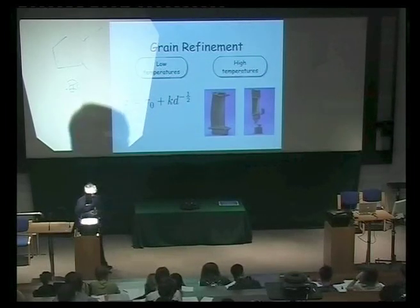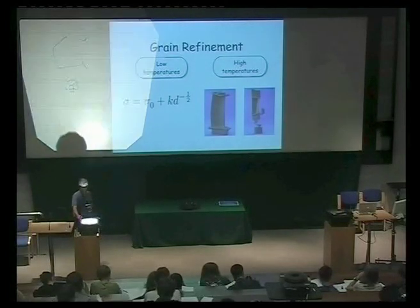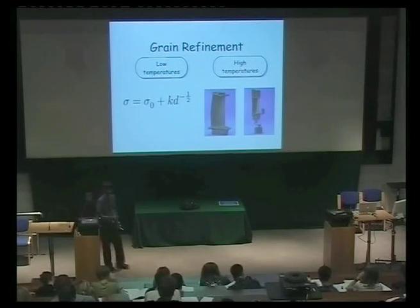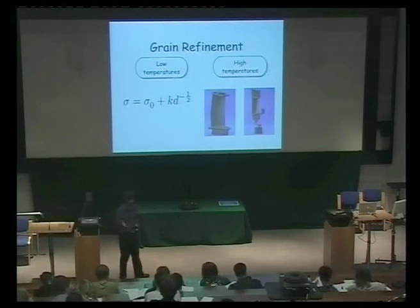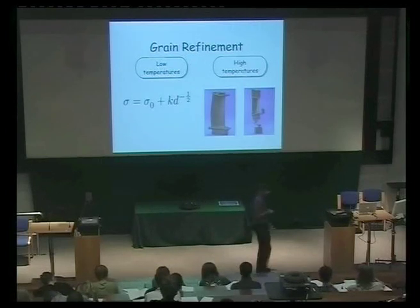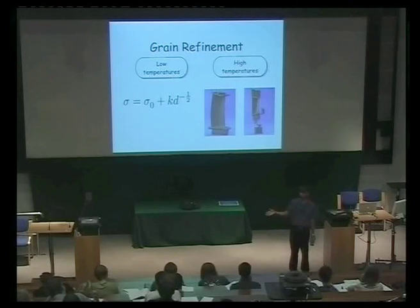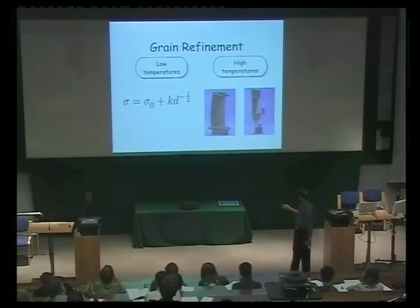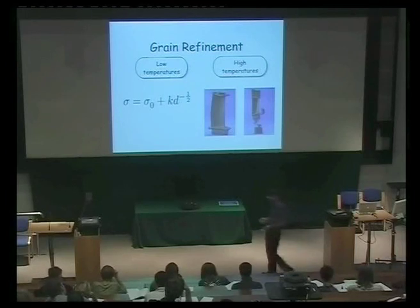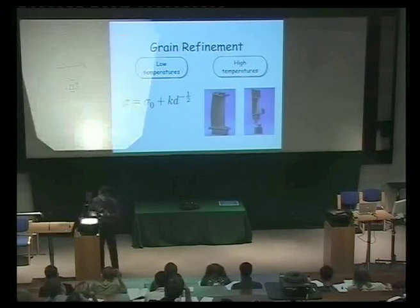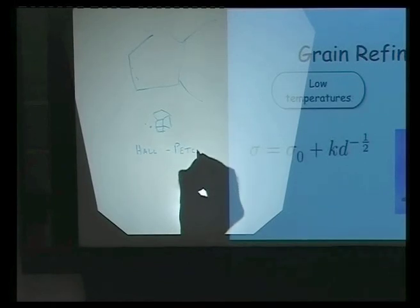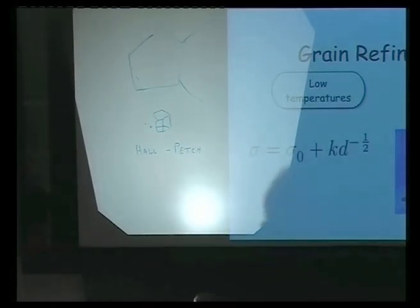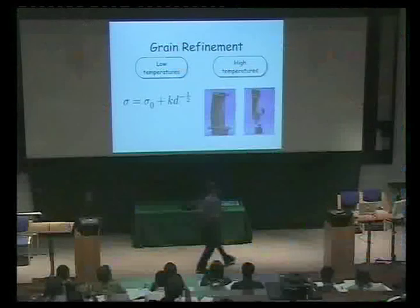The relationship between grain size — the size of our crystal inside a polycrystalline material — and strength is that the strength varies with one over the square root of the grain size. I won't go into the derivation, but it's fairly obvious that if you make the grain structure smaller, you put more obstacles in the path of the dislocation, and therefore the strength should rise. This is known as the Hall-Petch equation, a very famous equation invented in this department many years ago.